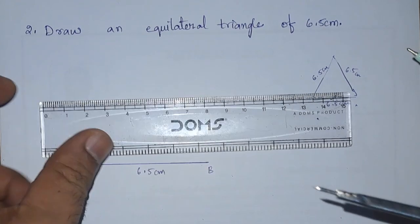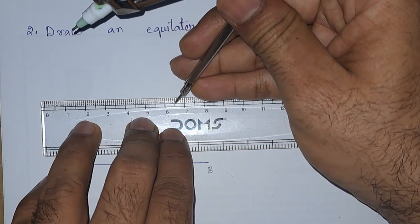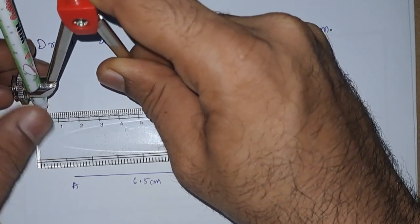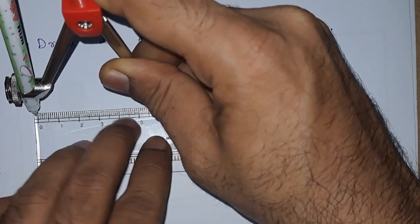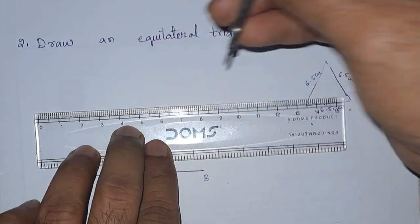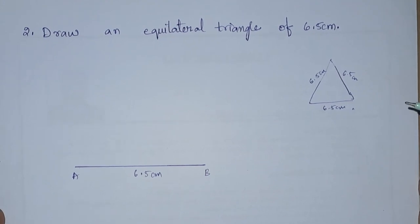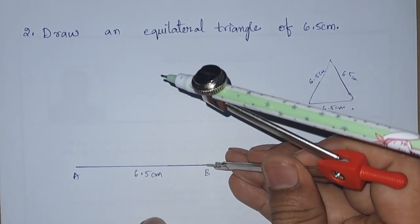Now we will take the compass and we will take the measurement, or you can say the radius, as 6.5 centimeter. After taking the radius as 6.5 centimeter, we will draw an arc from B.